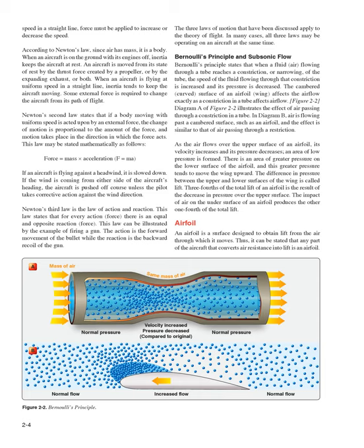Bernoulli's Principle and Subsonic Flow: Bernoulli's principle states that when a fluid (air) flowing through a tube reaches a constriction or narrowing of the tube, the speed of the fluid through that constriction is increased and its pressure is decreased. The cambered, curved surface of an airfoil (wing) affects the airflow exactly as a constriction in a tube affects airflow. As the air flows over the upper surface of an airfoil, its velocity increases and its pressure decreases, forming an area of low pressure. There is an area of greater pressure on the lower surface, and this greater pressure tends to move the wing upward. The difference in pressure between the upper and lower surfaces is called lift. Three-fourths of the total lift is the result of decreased pressure over the upper surface, while the impact of air on the undersurface produces the other one-fourth.